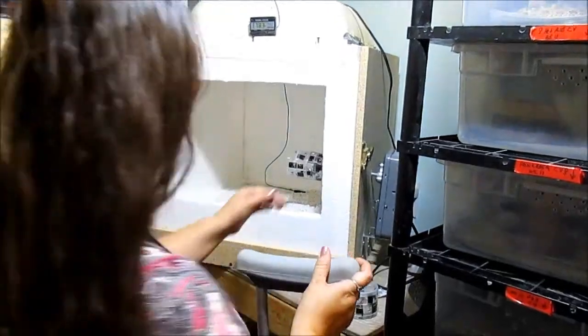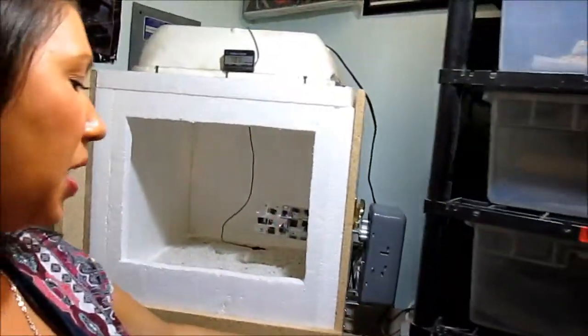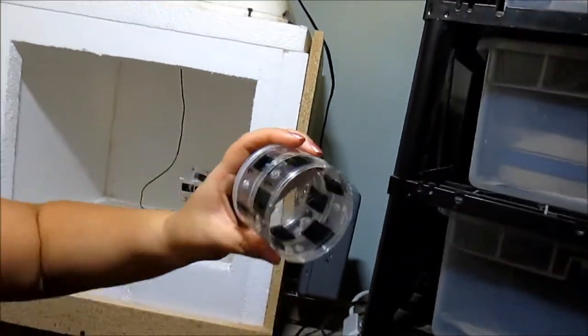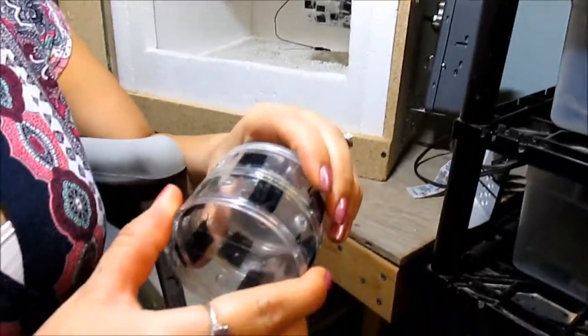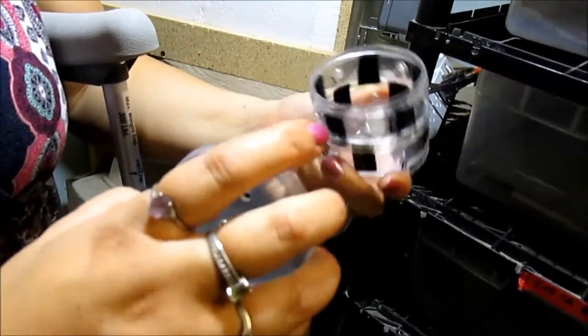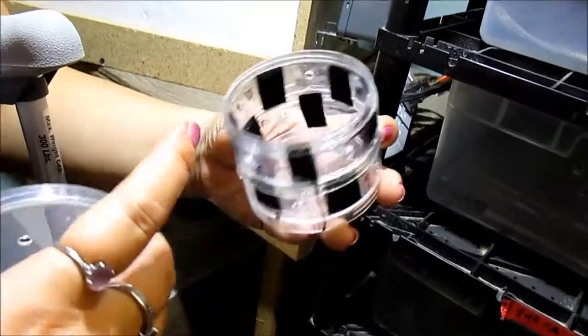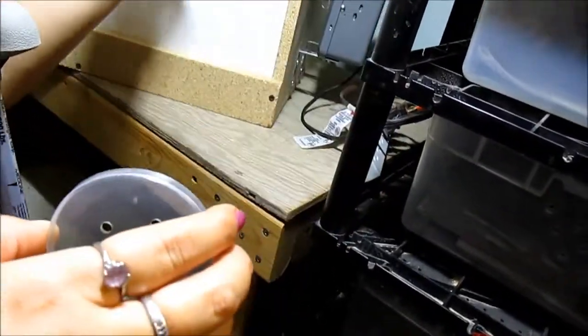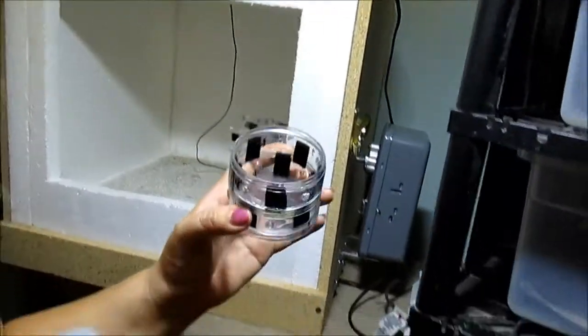This area here is for spider eggs. These little containers were made for holding beads. I got them from Hobby Lobby, but I took the center out and I have a couple different racks of them going. They all screw together.